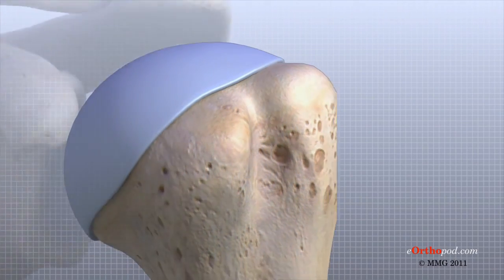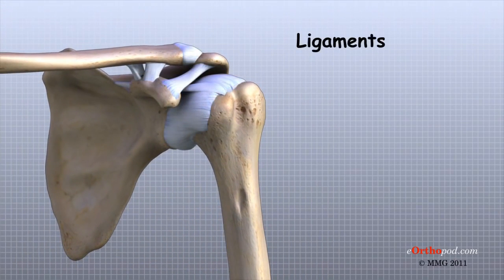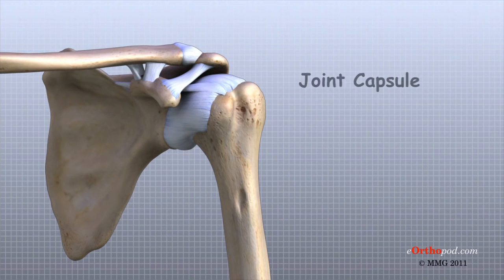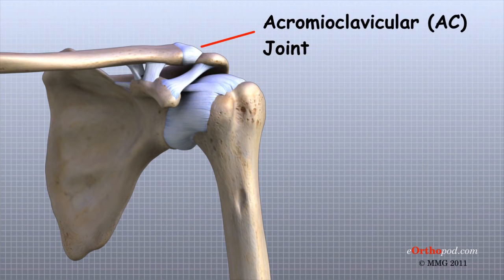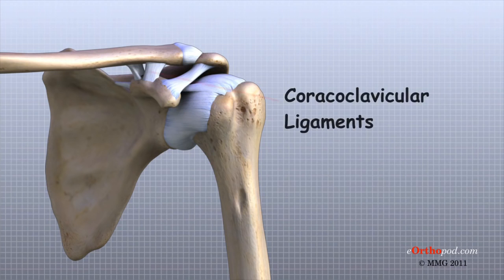There are several important ligaments in the shoulder. Ligaments are soft tissue structures that connect bones to bones. The joint capsule is a watertight sac that surrounds a joint. In the shoulder, the joint capsule is formed by a group of ligaments that connect the humerus to the glenoid. These ligaments are the main source of stability for the shoulder, helping hold the shoulder in place and keeping it from dislocating. Ligaments also attach the clavicle to the acromion in the AC joint, and two ligaments connect the clavicle to the scapula by attaching to the coracoid process, a bony knob that sticks out of the scapula in the front of the shoulder.